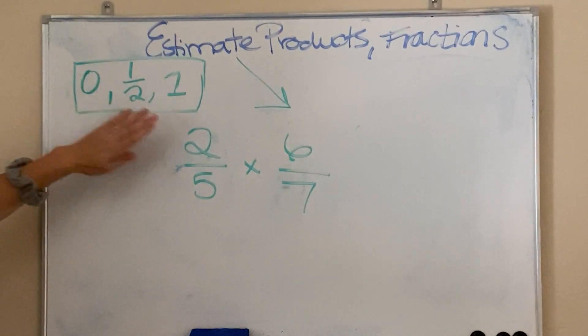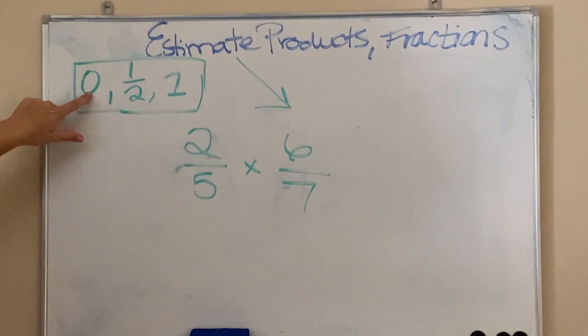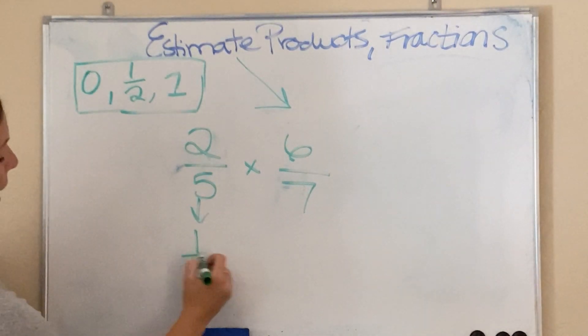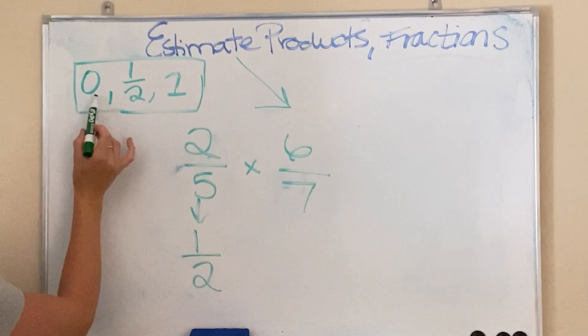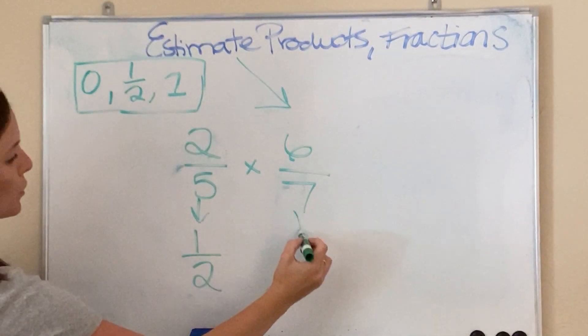Think of a number line. 2 out of 5, is that closer to 0, a half, or a whole? This is closer to a half. 6 out of 7, is that closer to 0, half, or a whole? That's closer to a whole.